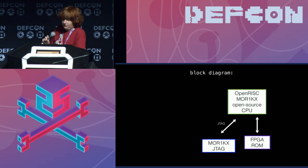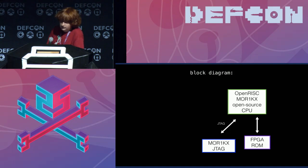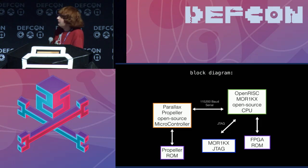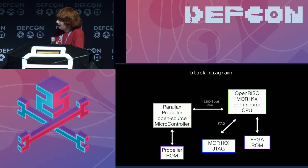You've got the OpenRISC mor1kx open source CPU hooked up to FPGA ROM and then it's got the JTAG interface there. We're going to add the Parallax Propeller over 115200 baud serial, and that's hooked up to the Propeller ROM where it stores the Spin code — that's the native language that the Propeller understands.